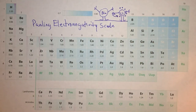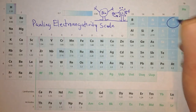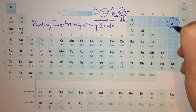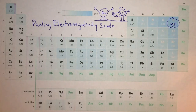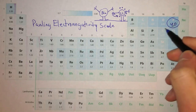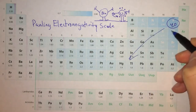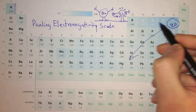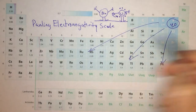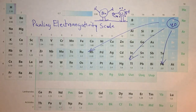Electronegativity is an arbitrary measure of how much an atom pulls on another atom's electrons in a bond. The Pauling scale is one of them. Somebody a long time ago decided that fluorine should have a value of about 4.0, and all of the other values were determined based on comparing them with fluorine.